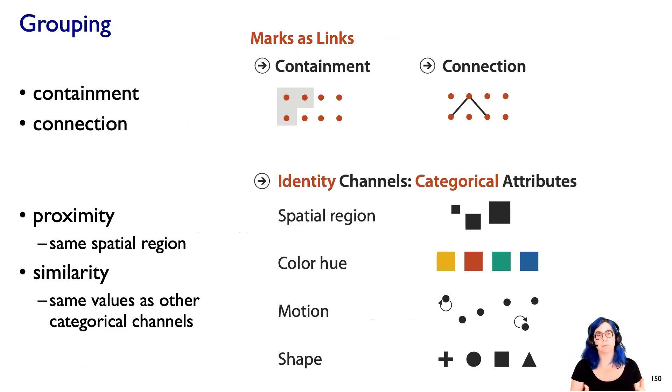That brings me to the idea of grouping. There are different ways to perceptually indicate grouping to our visual system. We've already talked about the idea that a mark could be used to convey information about links with containment and connection. And in addition, with all of these categorical attributes, these identity channels that are suitable for categorical attributes, well, having similarity within a level of these categorical attributes is how we can convey similarity.